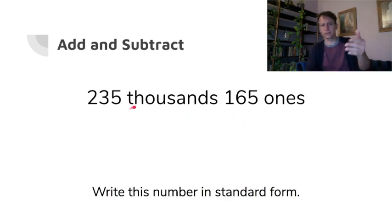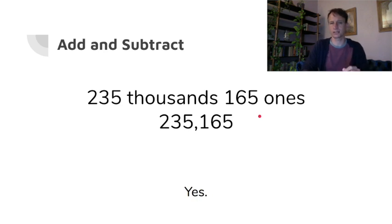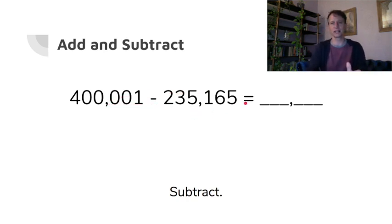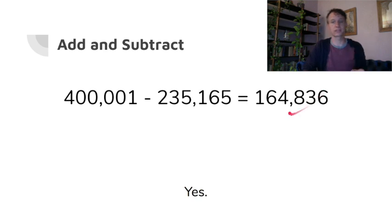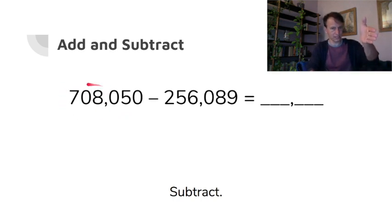Two hundred thirty-five thousand one hundred sixty-five ones looks like that in standard form. We're cruising through here — that's why I said either pause or do the calculations later. A little addition and subtraction practice, and of course we're going to subtract across those lovely zeros and regroup. You should get one hundred sixty-four thousand eight hundred thirty-six as your difference.